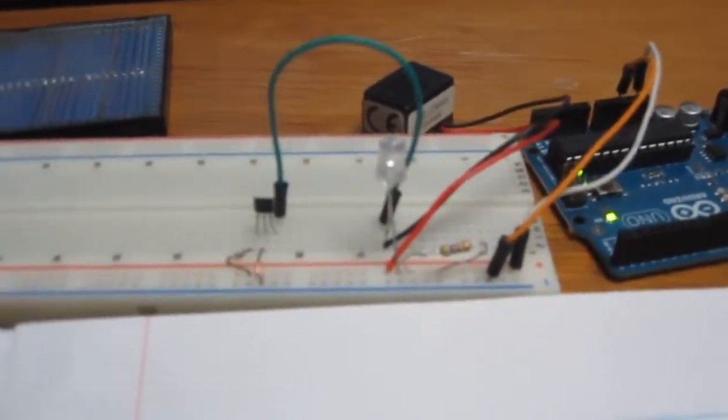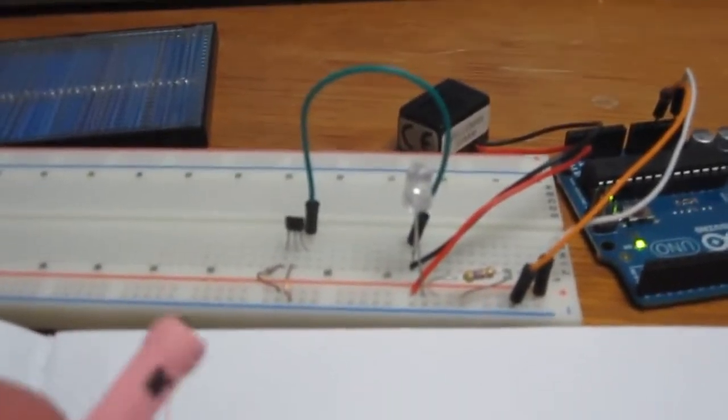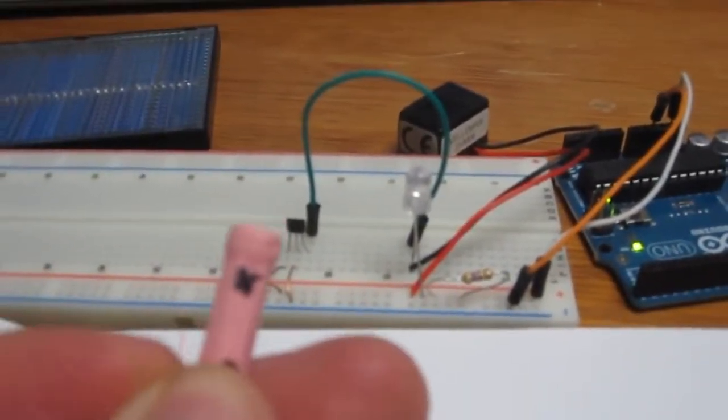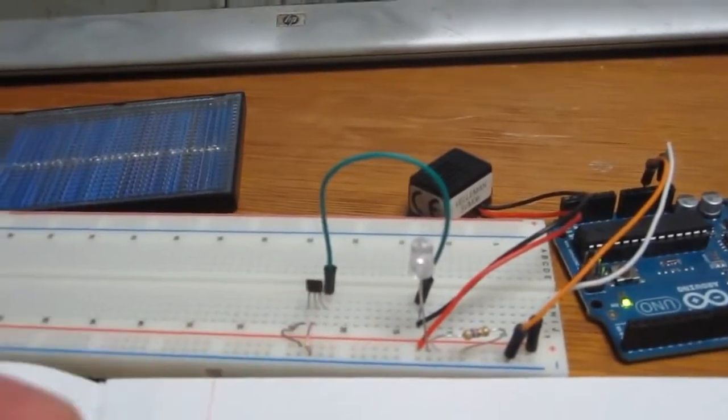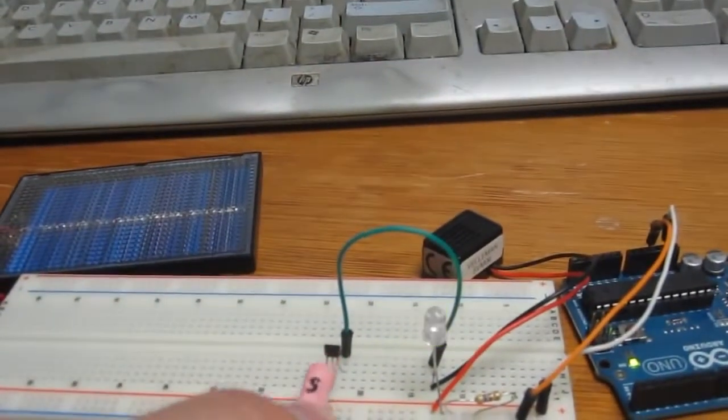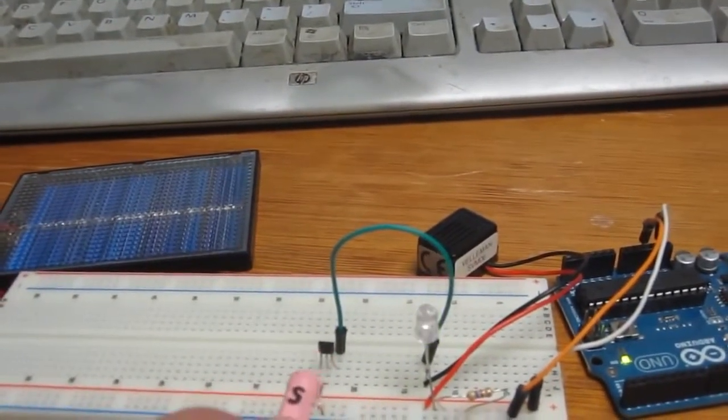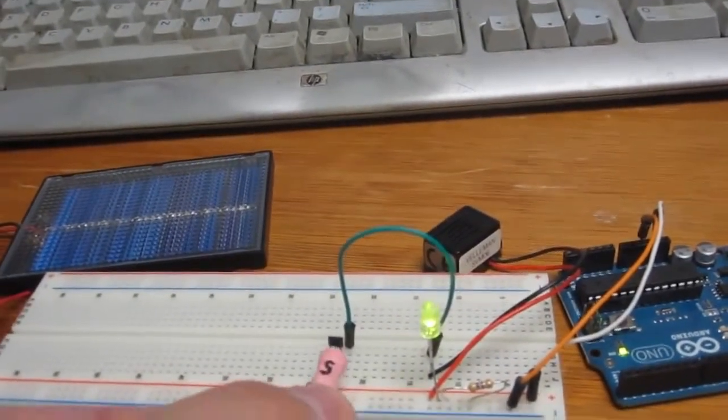So you can see that the circuit is not complete right now, but when I approach the Hall Effect sensor with the north end of a magnet, you can see that nothing happens. But when I approach, the buzzer turns on, as does the light, and it has to get a certain distance away.